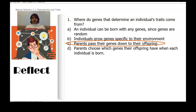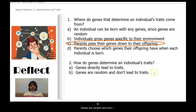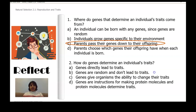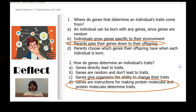Here's another question: how do genes determine an individual's traits? A — genes directly lead to traits. B — genes are random and don't lead to traits. C — genes give organisms the ability to change their traits. Or D — genes are instructions for making protein molecules and protein molecules determine traits. Turn and talk to someone near you and respond. That's right, it's D: genes are instructions for making protein molecules and protein molecules determine traits.